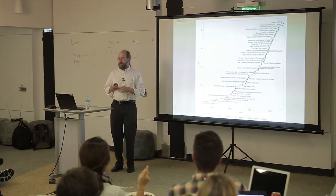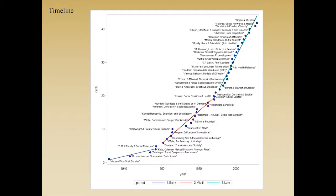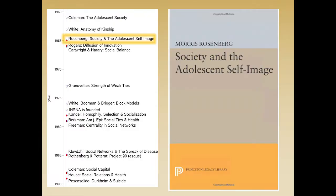I like to break the field into three periods. There's an old period that started in the 1940s, 50s, and 60s — this was Moreno and the development of social network analysis. It was a very slow climb for a while. There was a middle period between the 60s, 70s, and early 80s where we got some really nice pieces. And then there's the modern era where things have really just taken off and skyrocketed.